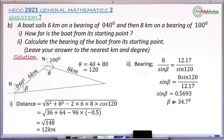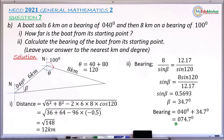To find beta, I take the sine inverse of 0.56930, which gives 34.7 degrees. Adding this to the 40-degree bearing gives the bearing of the boat from its starting point: 40 degrees plus 34.7 degrees equals 74.7 degrees, which rounded to the nearest degree gives 075 degrees.